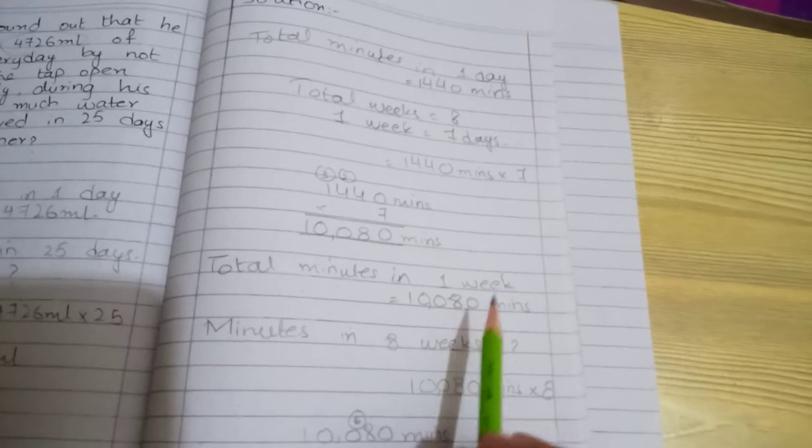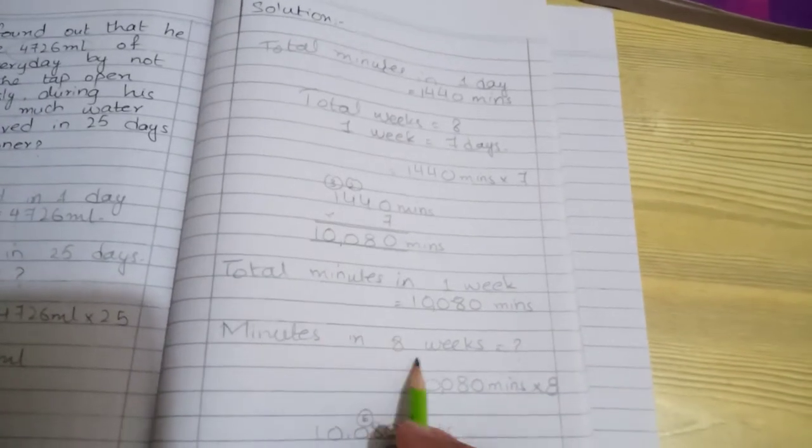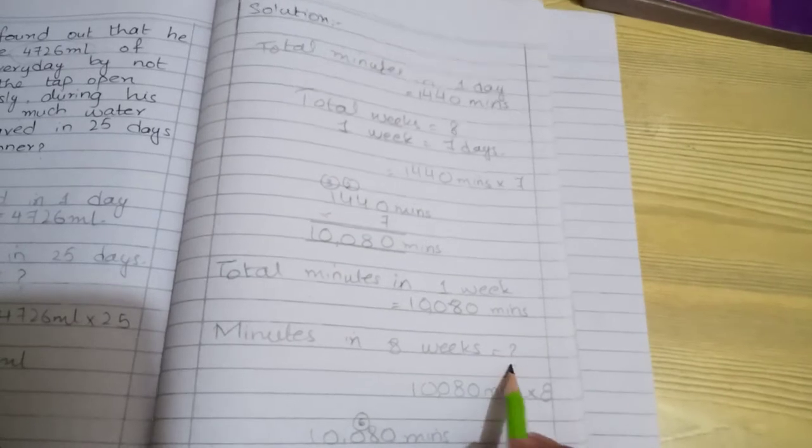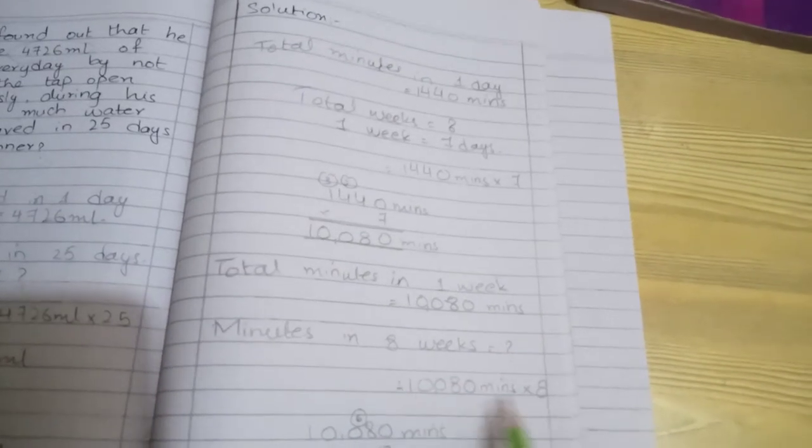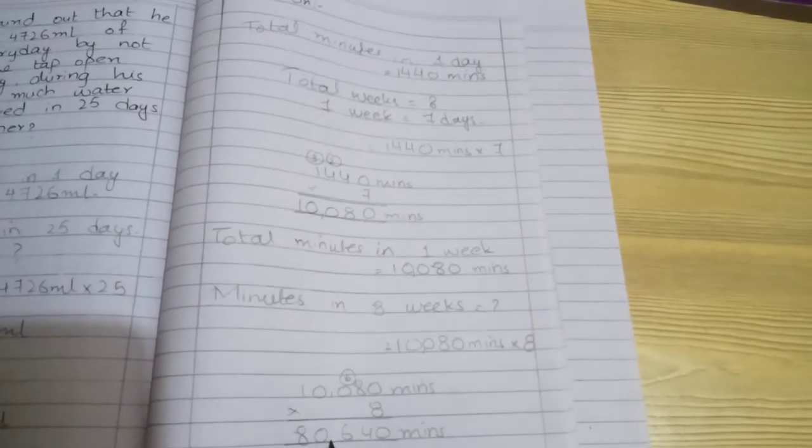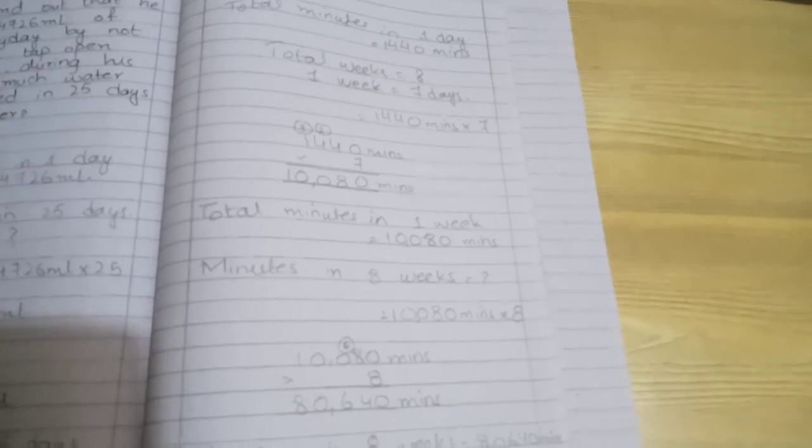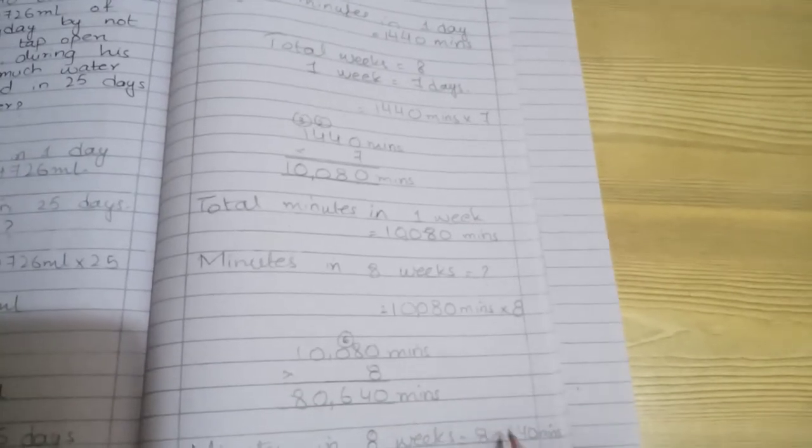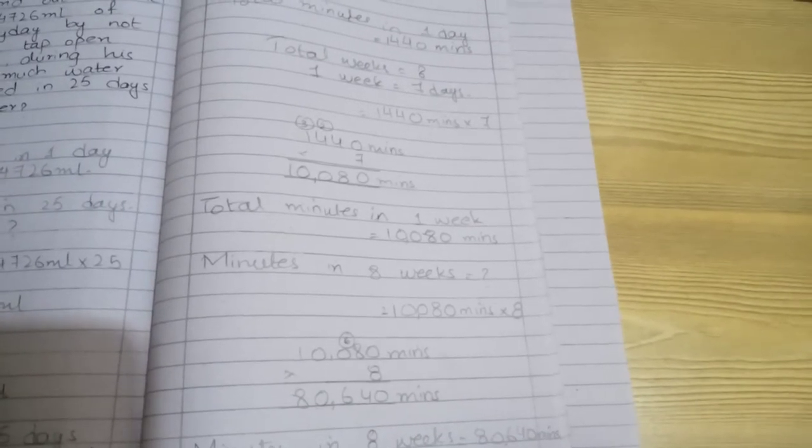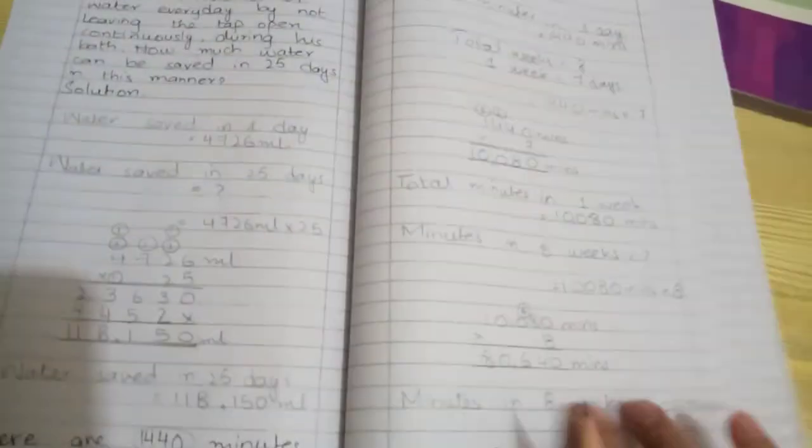10,080 minutes in one week. Now for 8 weeks, we multiply one week by 8. The answer is 80,640 minutes. Minutes in 8 weeks equals 80,640.